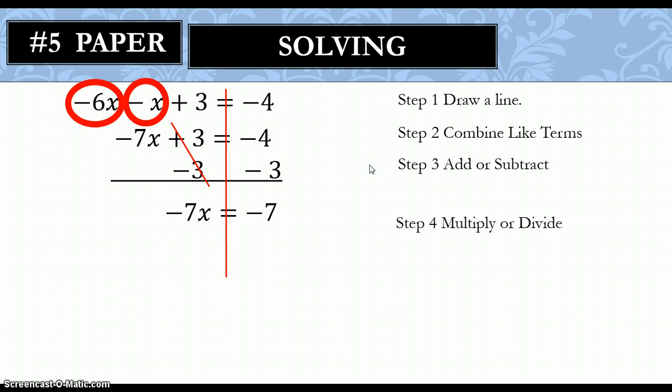Step number 4. We are either going to multiply or divide. Looking at our problem, we are multiplying our x by negative 7, which means we want to do the opposite, which is to divide by negative 7. Again, whatever you do to one side of the equation, you have to do to the other side. Now, remember, negative 7 divided by negative 7, that reduces down to a 1. So, you are left with 1x equals negative 7 divided by negative 7. Again, that is 1. So, you are left with 1x equals 1, which is simply just x equals 1. Step number 4 was to get our answer, which is x equals 1.